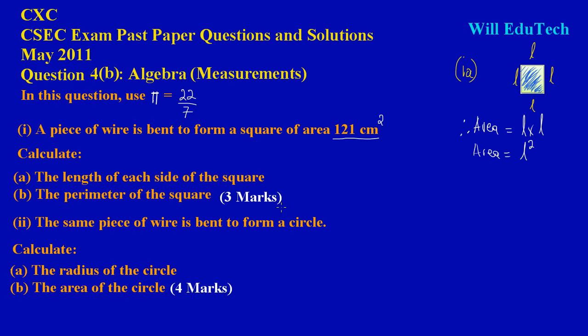Since the area of a square is L squared, and they gave us the area as 121 centimeters squared, I can substitute to say 121 is equal to L squared. To solve for L, I take the square root of each side, because the square root cancels the square. The square root of 121 is 11, so L is equal to 11 cm.